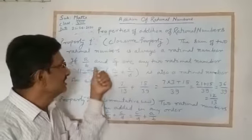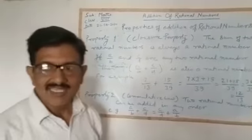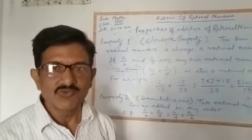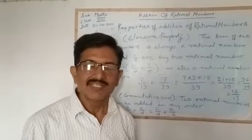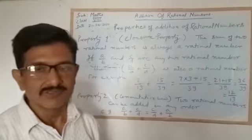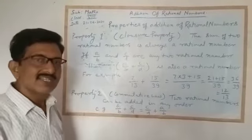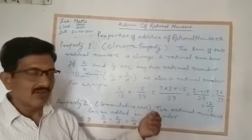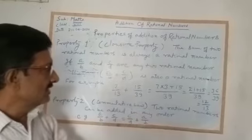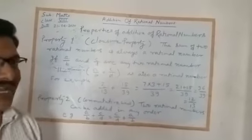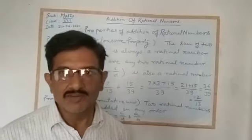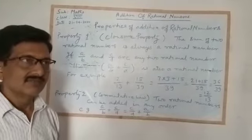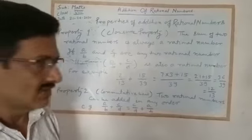This law tells us that when two rational numbers are added, we always get a rational number. Now in the second property, that is the commutative law. Commutative law tells us that two or more rational numbers can be added in any order, but we will get the same result.